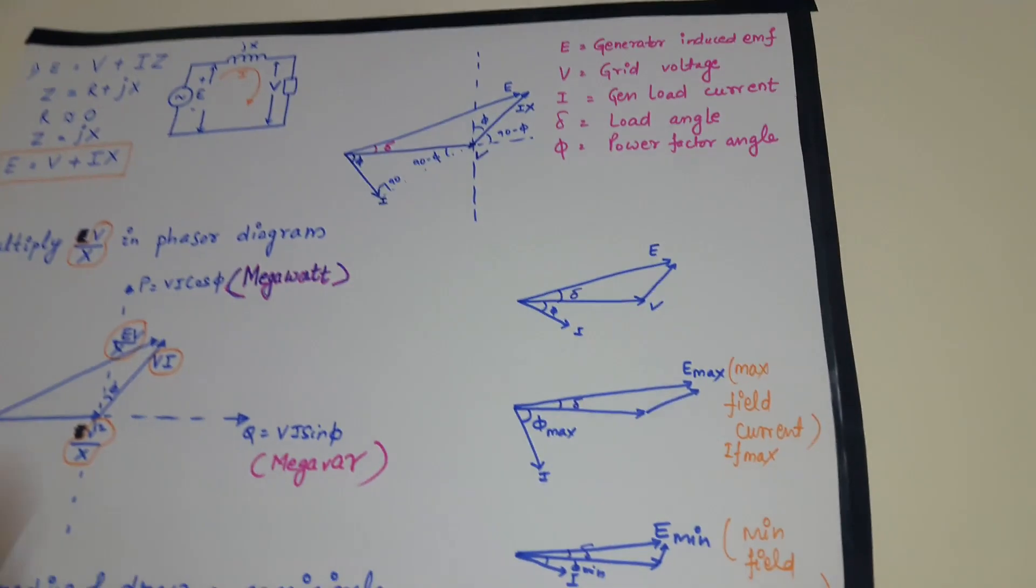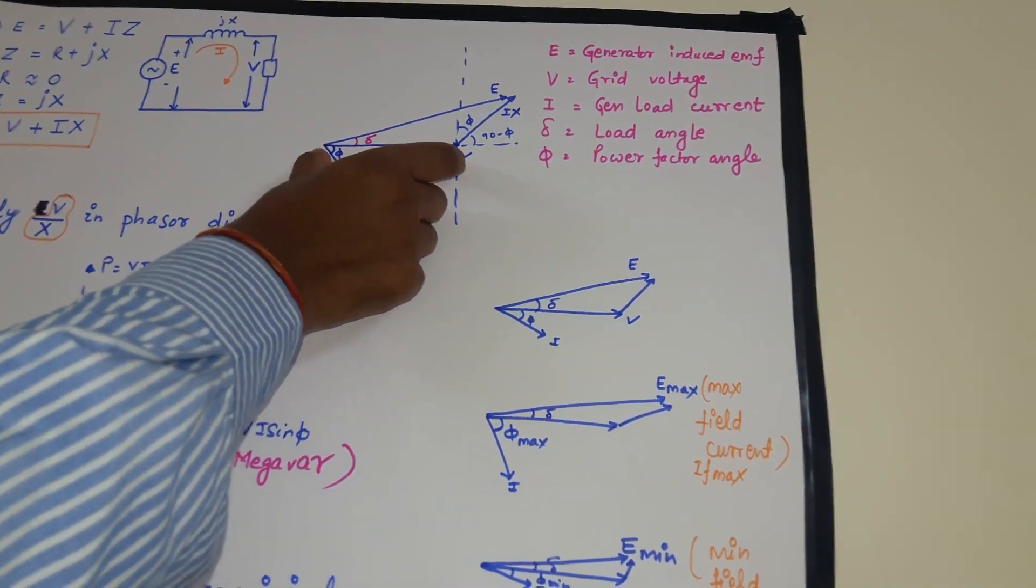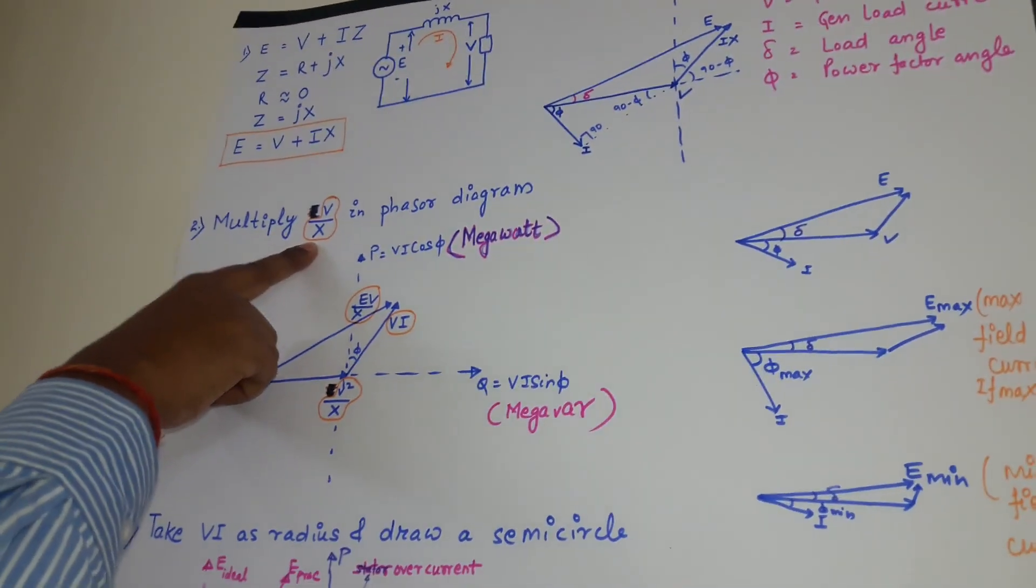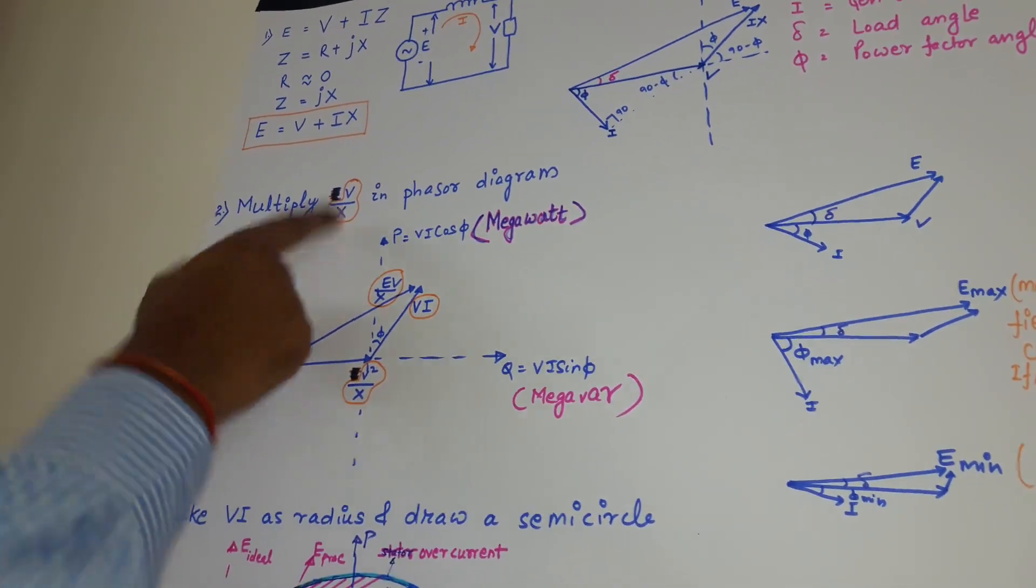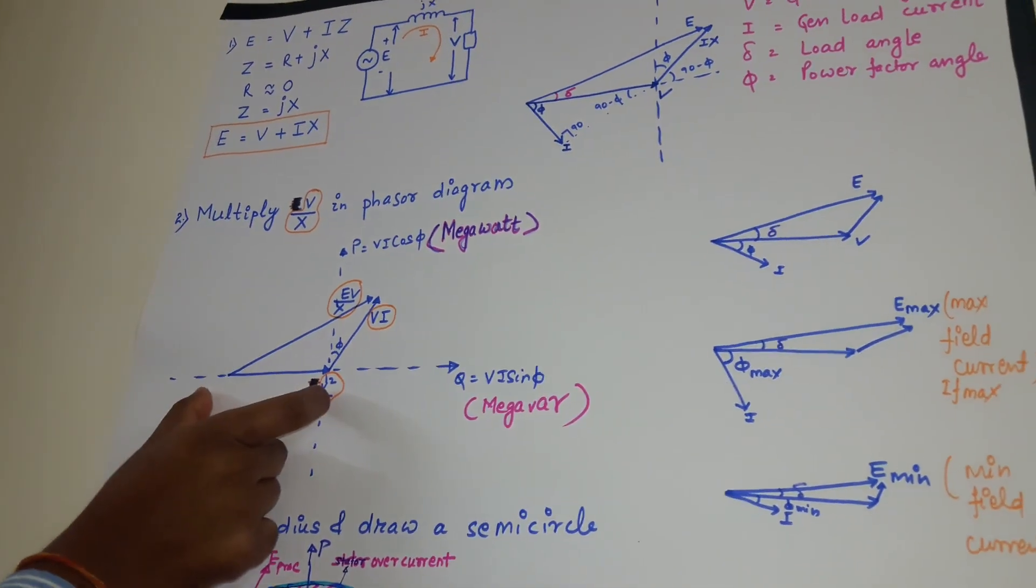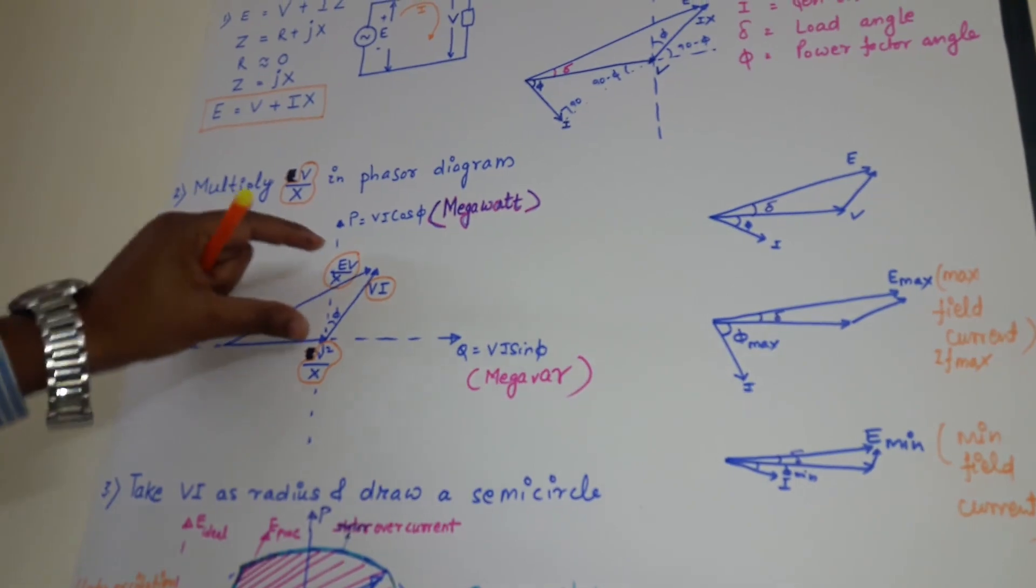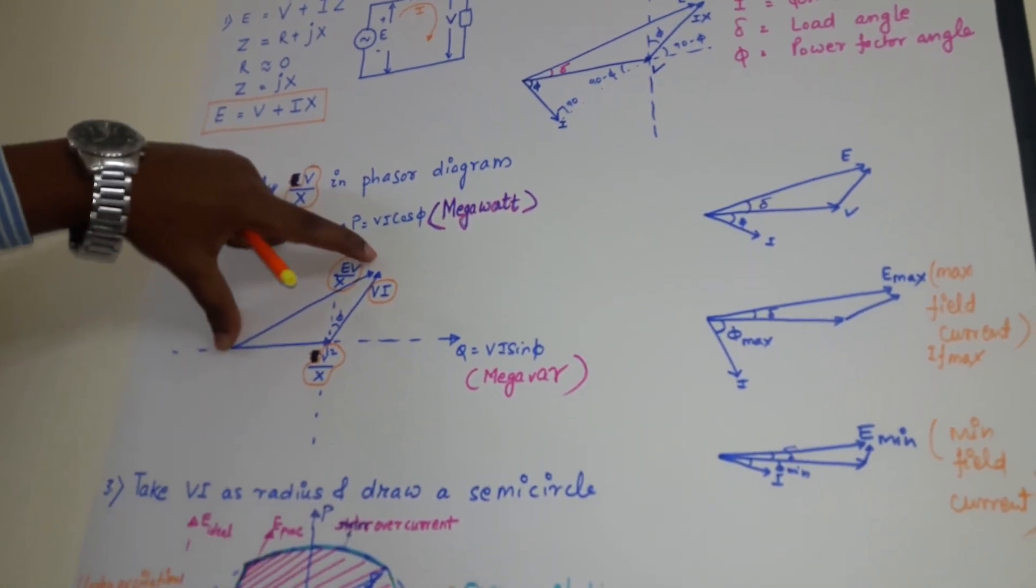Now what I will do? I will multiply this side, this side and this side, these three sides with the term V by X. So what I am getting? This is V squared by X. This is VI by X. And this is EV by X.